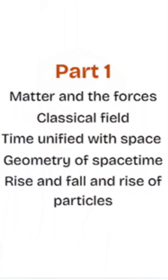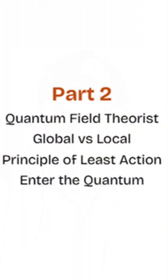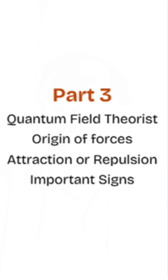Now let me give you a quick overview of the coverage of the book. As you can see right on the screen, it starts with Part One, which is basically the rise of the classical field — how matter and theories move, time unified. Then Part Two is the road to quantum field theory, explaining principles of least action, global versus local, entering the quantum world, etc. Then Part Three, becoming a quantum field theorist, explains areas like particles as excitations of fields using the mattress analogy, demonstrating sources and sinks to detect particles, and so on.